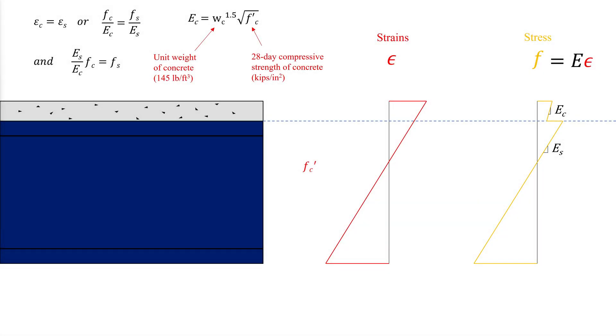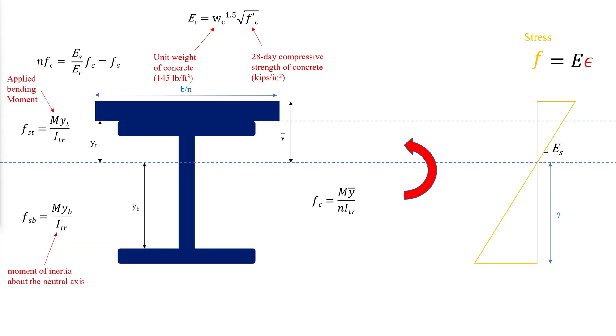In the last video, we introduced composite beams made of steel rolled sections and concrete slabs. We also discussed how the concrete slab can be converted to equivalent thickness of steel to use the homogeneous section equations.